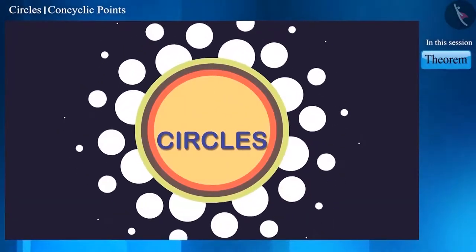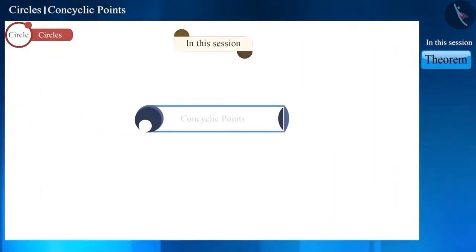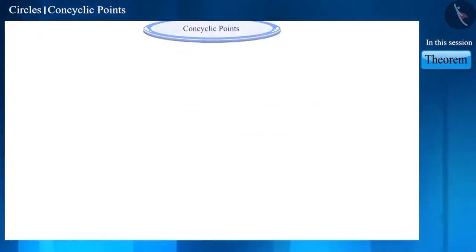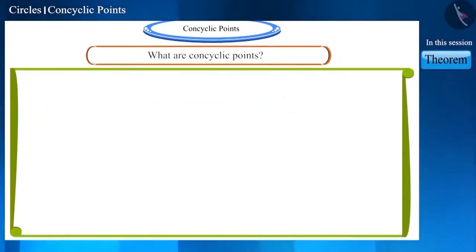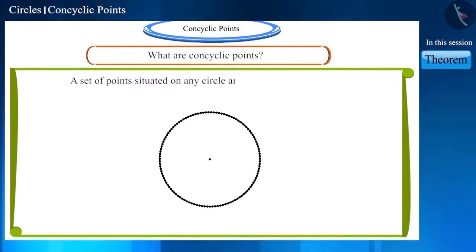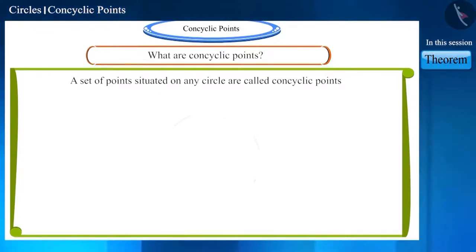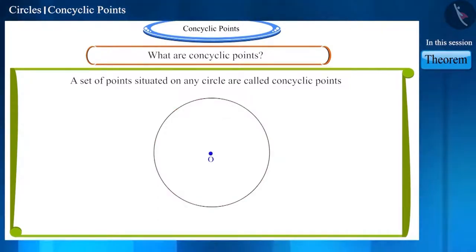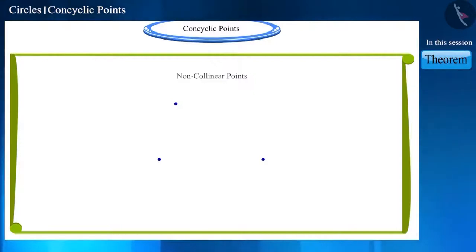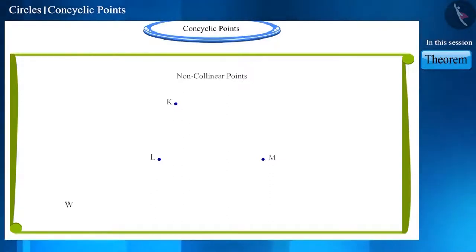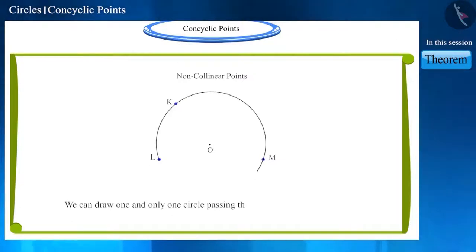Hello friends, welcome to this video on circles. In this video we will discuss about concyclic points and a theorem related to it. A set of points situated on any circle are called concyclic points. In this circle whose center is O, all the points located on the circumference are concyclic points. If we are given three non-collinear points K, L, and M, we know that we can draw only one circle passing through them, so these three points are concyclic points.